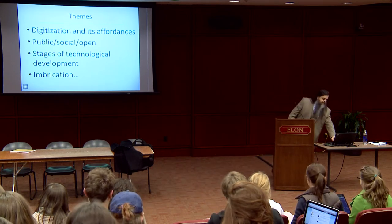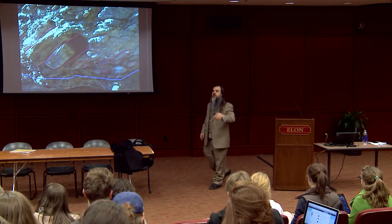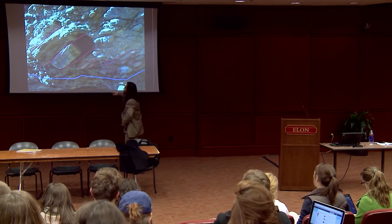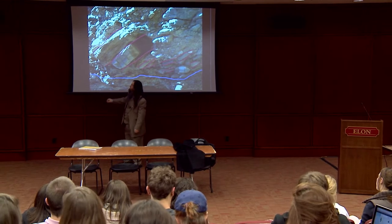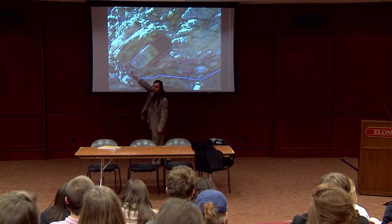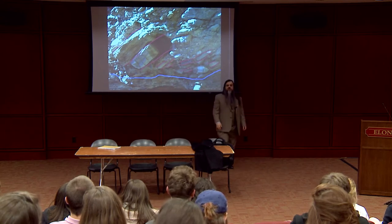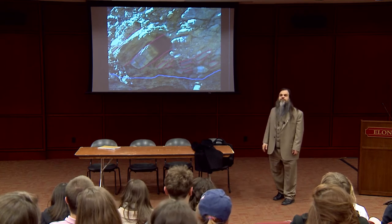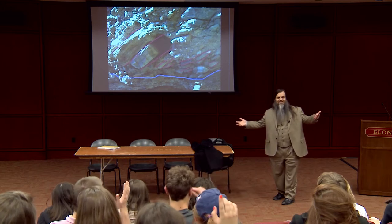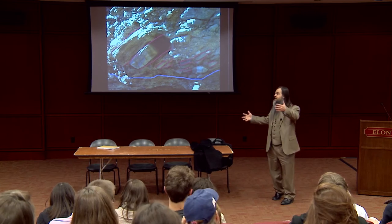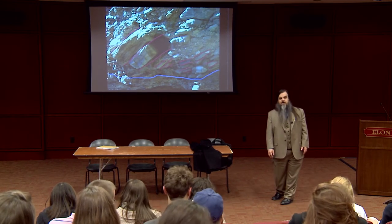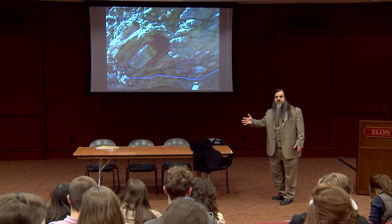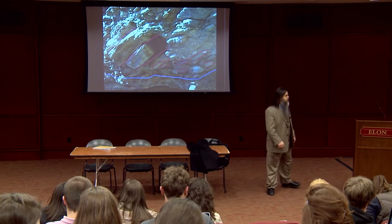Fourth theme — the only one with a picture — is imbrication. This visual metaphor from geology and architecture refers to the way rocks fall with a slight overlap, so that part of each rock is obscured and part is revealed. This is a metaphor for how we use technology. When we get a new technology, it blots out some old technologies but leaves some remaining. How many of you have ridden a horse? That's 10th-century technology, but we still have it. In World War II — the great age of mechanized warfare — people were still using mules and horses. The technologies of the new don't completely blot out the old.